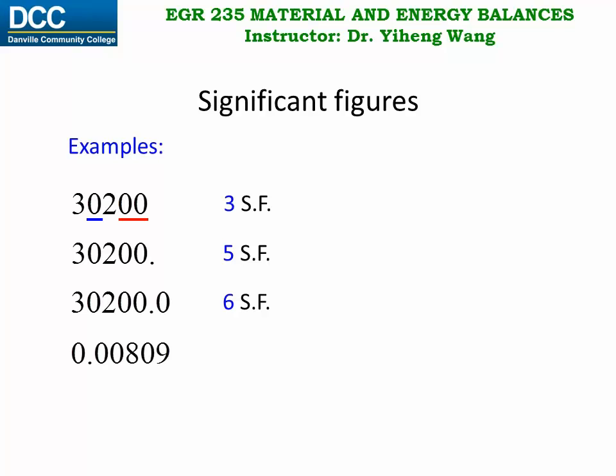For this number here, it does have a decimal point, and these three 0s are leading, therefore they are all insignificant. This 0 is not, therefore it is significant, so this number 0.00809 has three significant figures. And if I add another 0 to the end, now it has four significant figures.